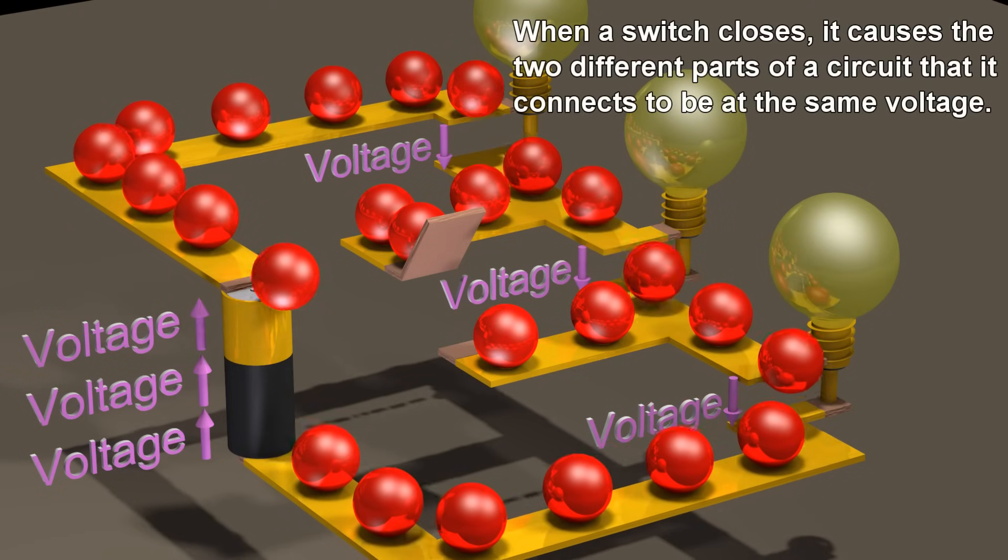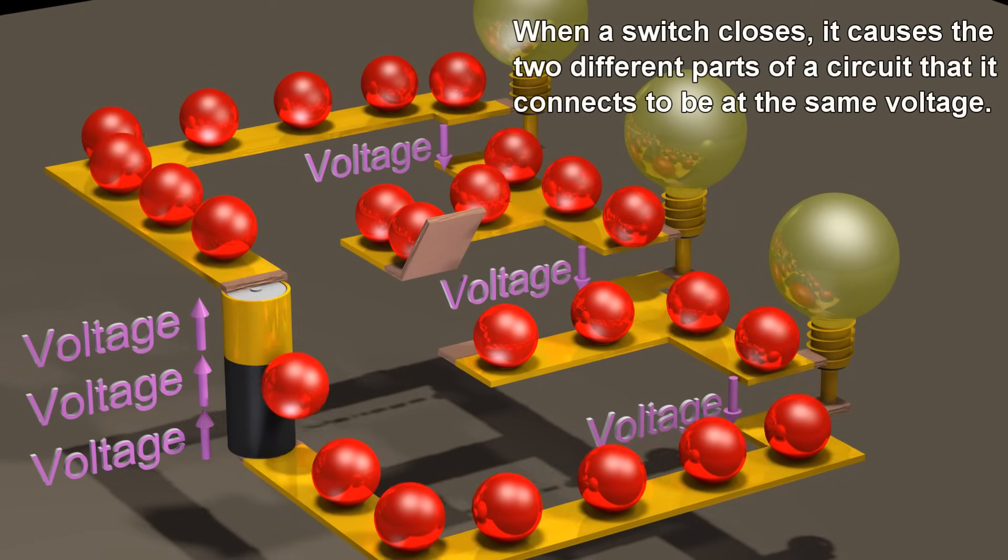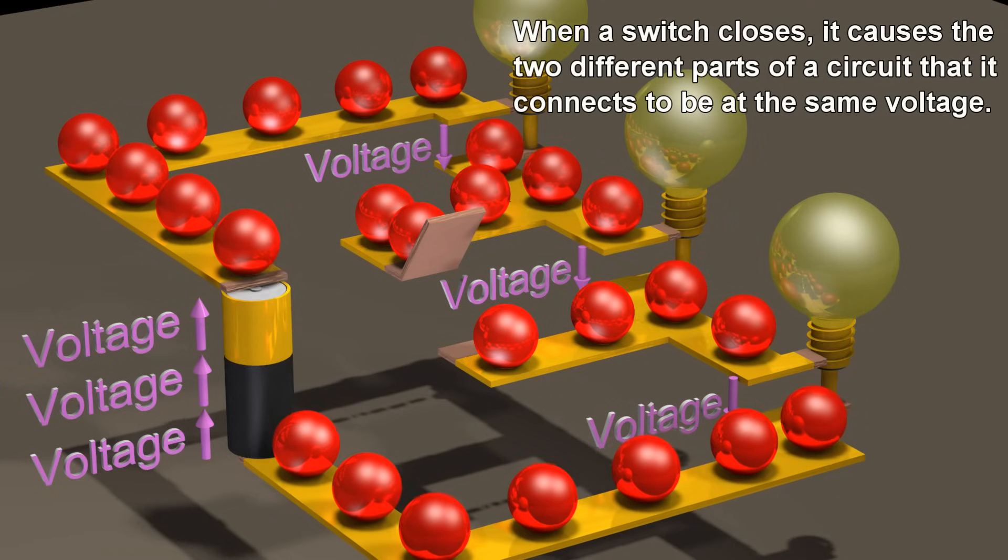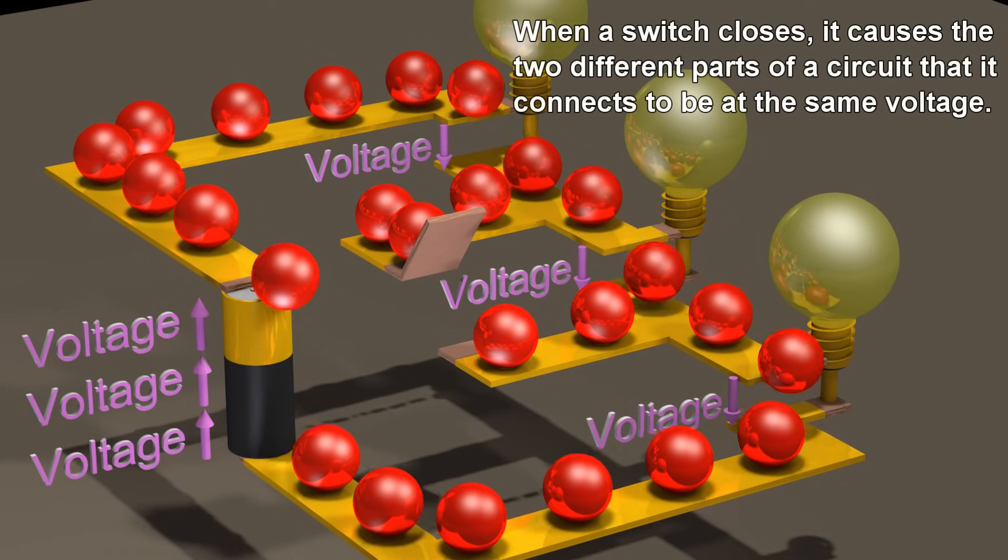When a switch closes, it causes the two different parts of a circuit that it connects to be at the same potential energy.